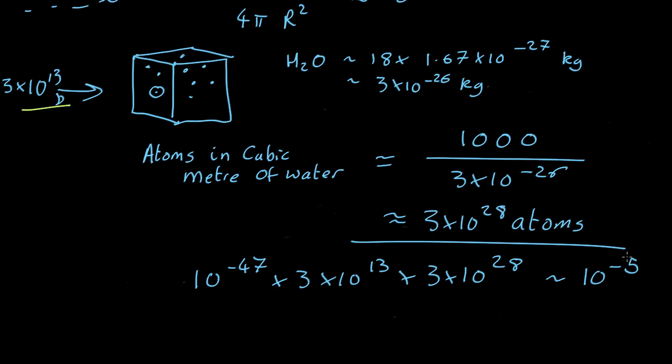So we've got 30 trillion neutrinos going through a cubic metre of water. But on average, the odds of even one of these neutrinos interacting with any atom is 10 to the minus 5. One in 100,000.